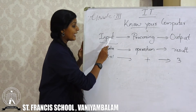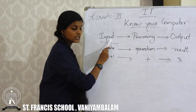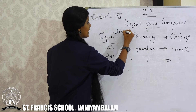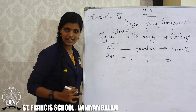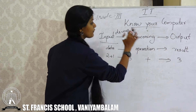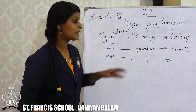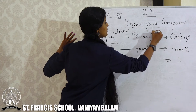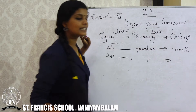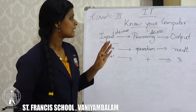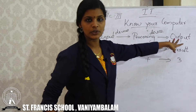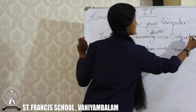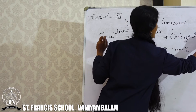When we are entering data or input, we will use some devices. Those devices are known as input devices. At the time of an operation being performed, we use a processing device. At last, we will get a result — that means output — and using one device we will get that result, which is known as an output device.